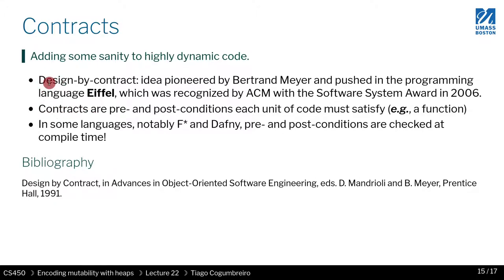Contracts, to put it simply, are just preconditions and postconditions that you put around your code. You take a function and say what are the assumptions of your parameters, and then you also say what the client — whoever is calling your function — should assume from the result, from the output. The former you call precondition, the latter you call postcondition.